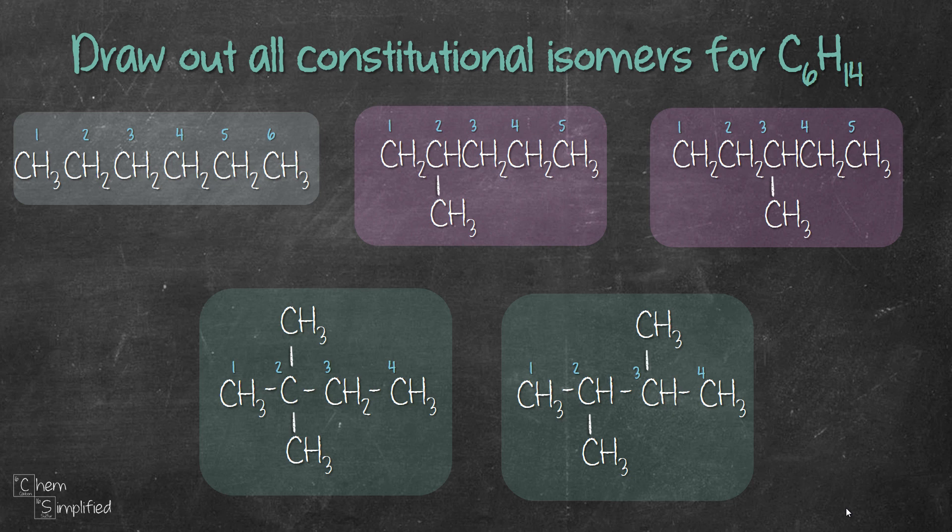To recap, the systematic way that we use was, we started off with 6 carbon straight in a row, a 6 carbon chain, and then that's it. There's no other way to draw other 6 carbon chains. So we move on to 5 carbon chain. Because we have 5 carbon straight in a row, we have 1 extra carbon. So we try sticking it from carbon number 2, and then we move it to carbon number 3. And then we've exhausted all possibility.